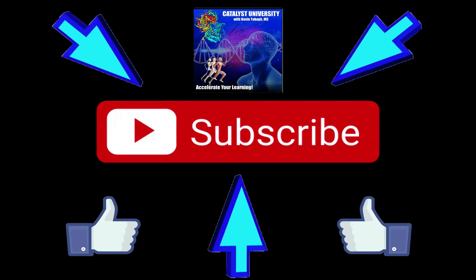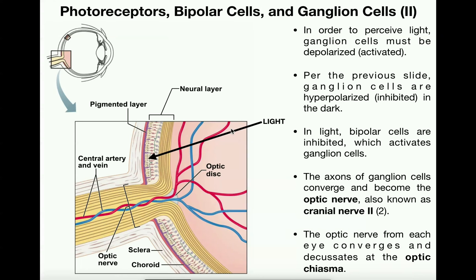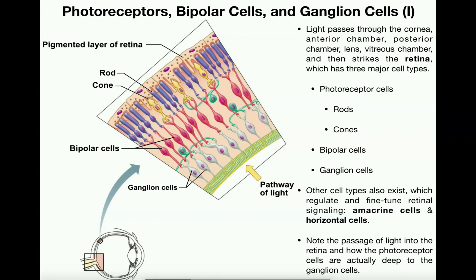Welcome back to Anatomy on Catalyst University. My name is Kevin Tokoff. Please make sure to like this video and subscribe to my channel for future videos and notifications. This is going to be the third video in a set of three videos on visual physiology. In the previous two videos, we talked about all the cells of the retina — photoreceptor cells, bipolar cells, and ganglion cells.